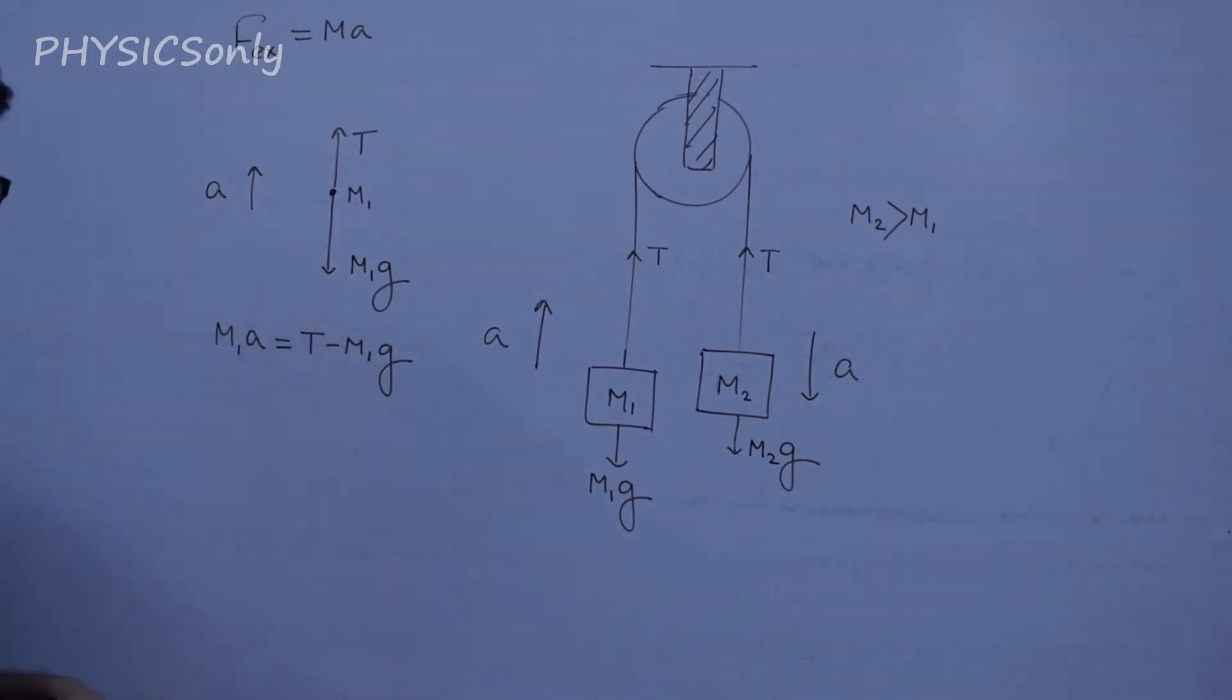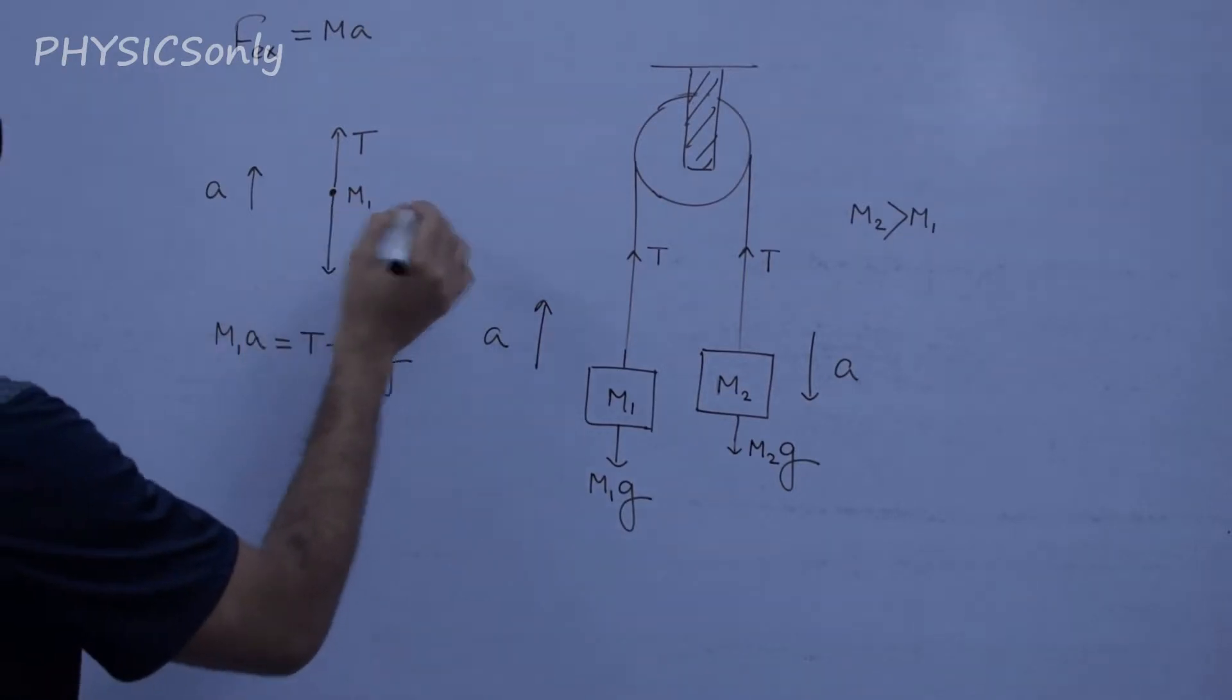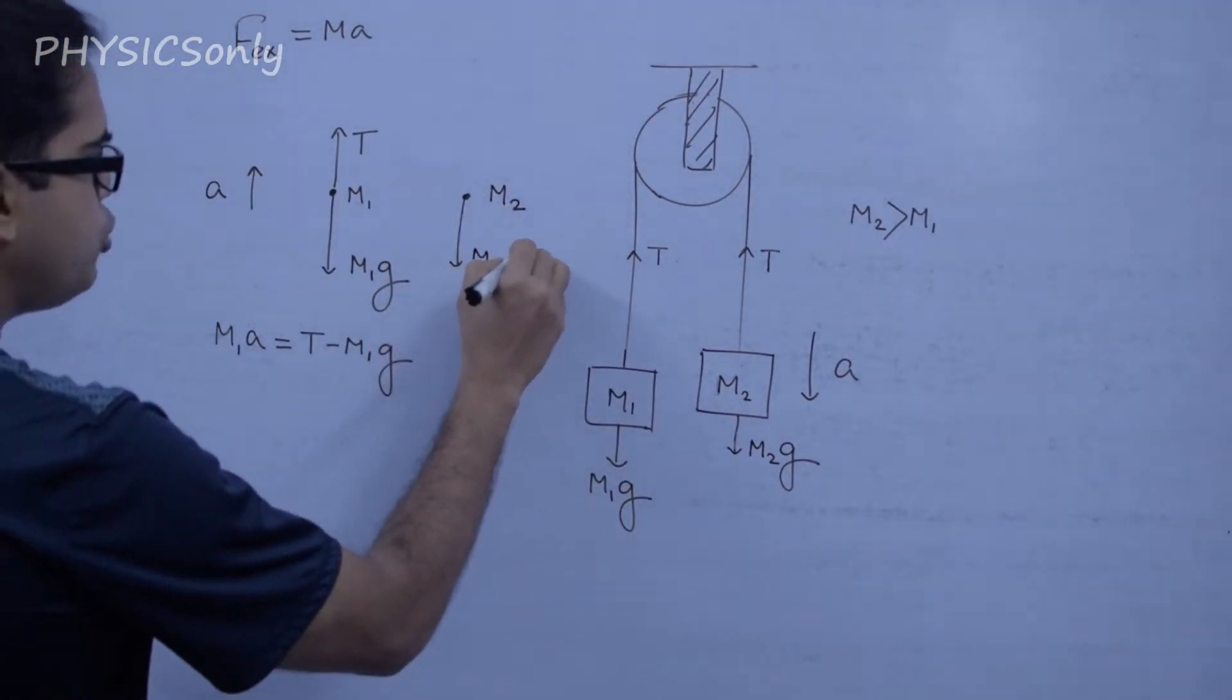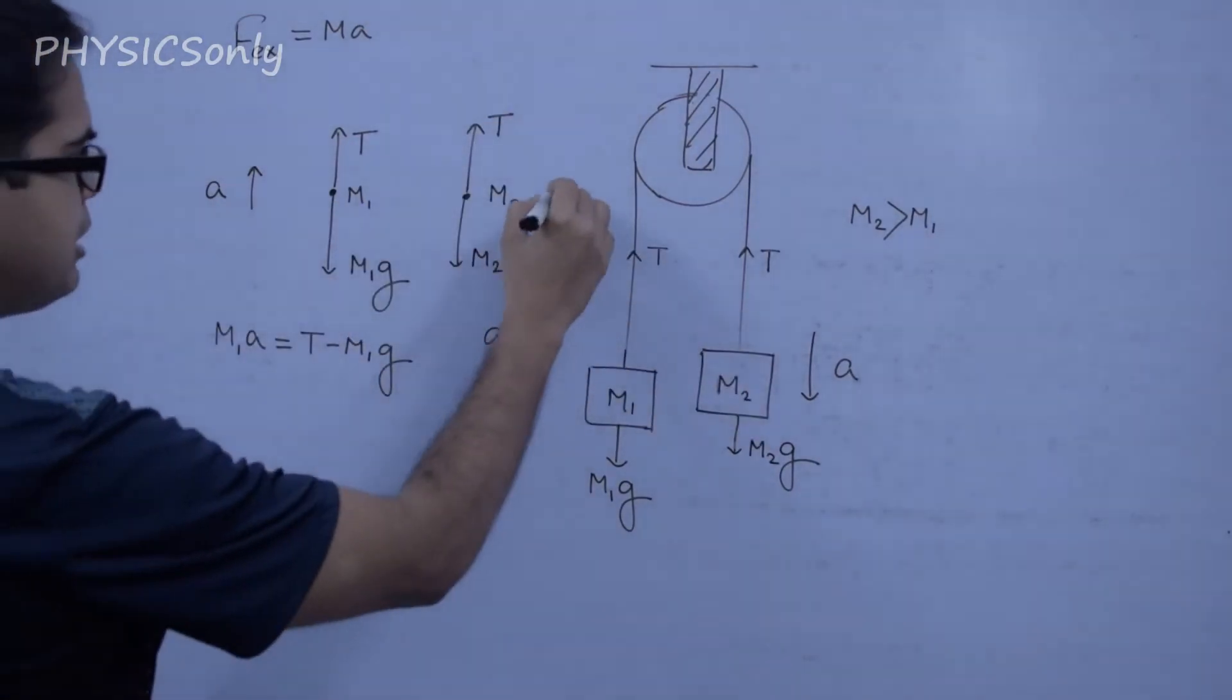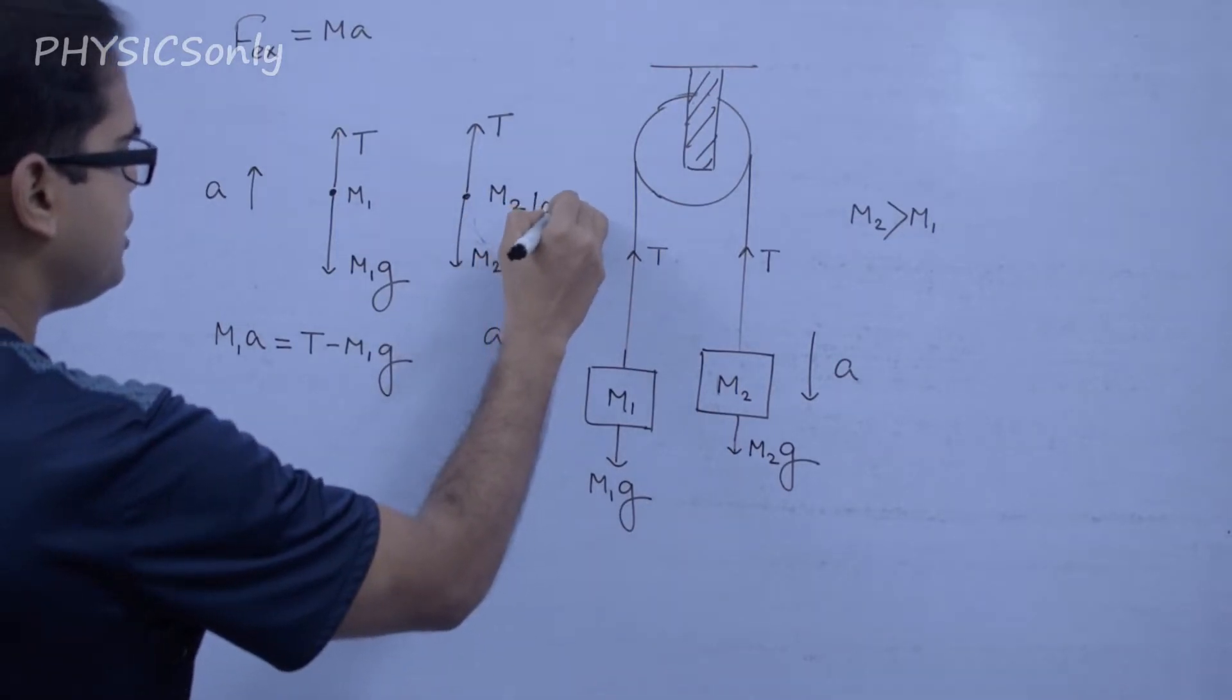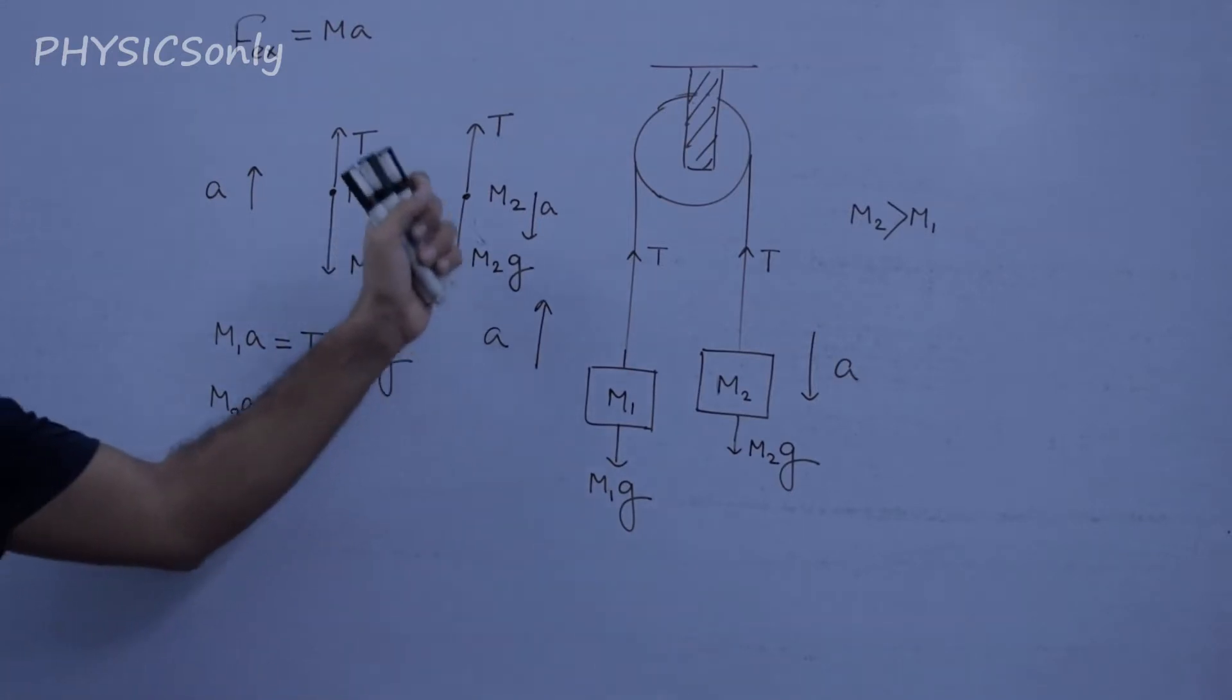In this equation, we can write for M2. How much is M2? M2 times a is the tension T. M2a is equal to T minus M2g.